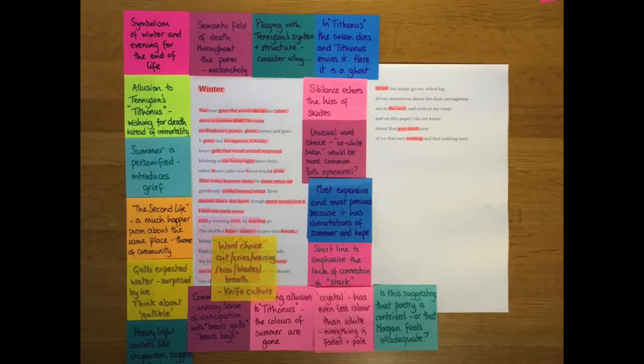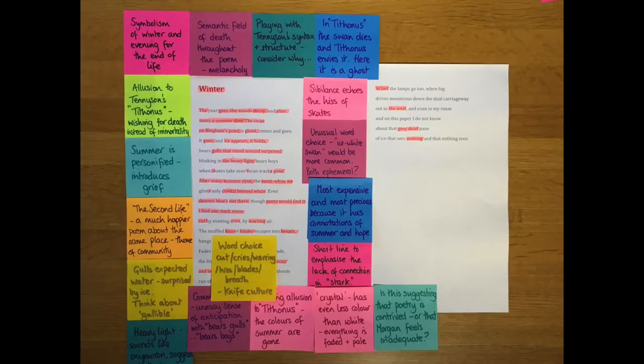We then move on with the stark scene described with cut, cries, warring, hiss of blades and breath. All of these words give us the fact that Morgan is aware of Glasgow's knife culture at that time that he was writing. The word choice here has a strong semantic field of knives and conflict.